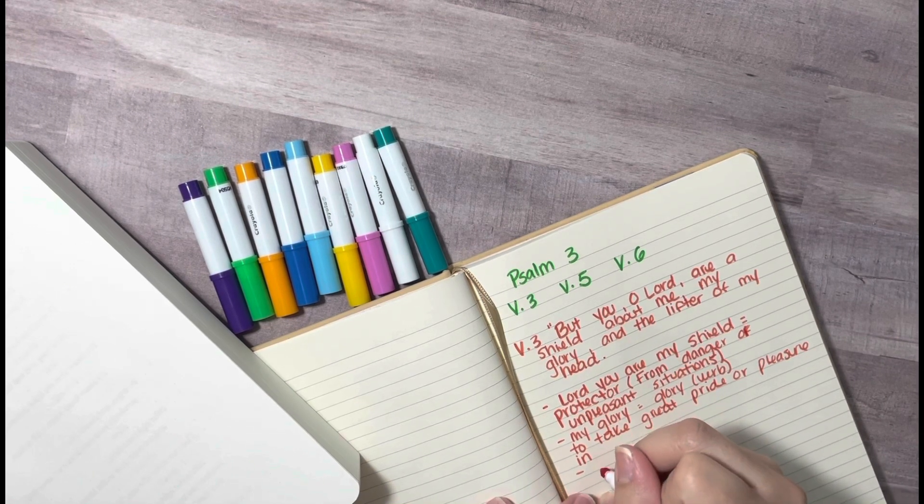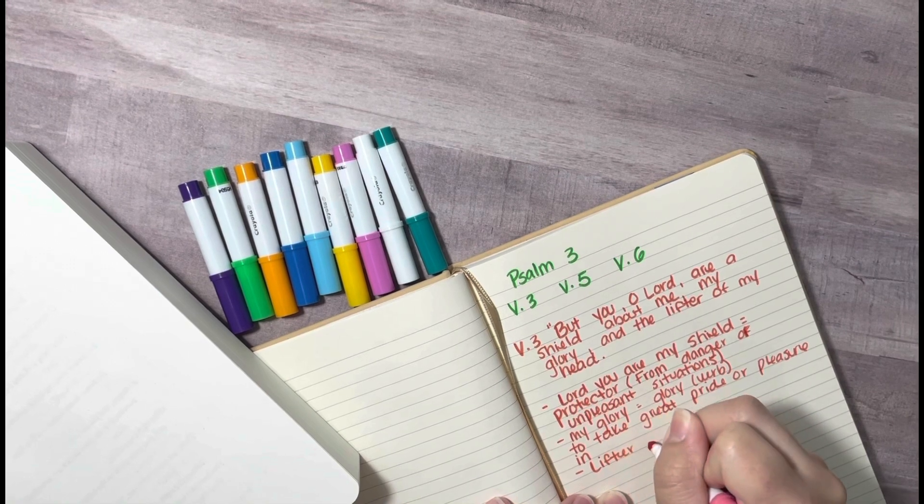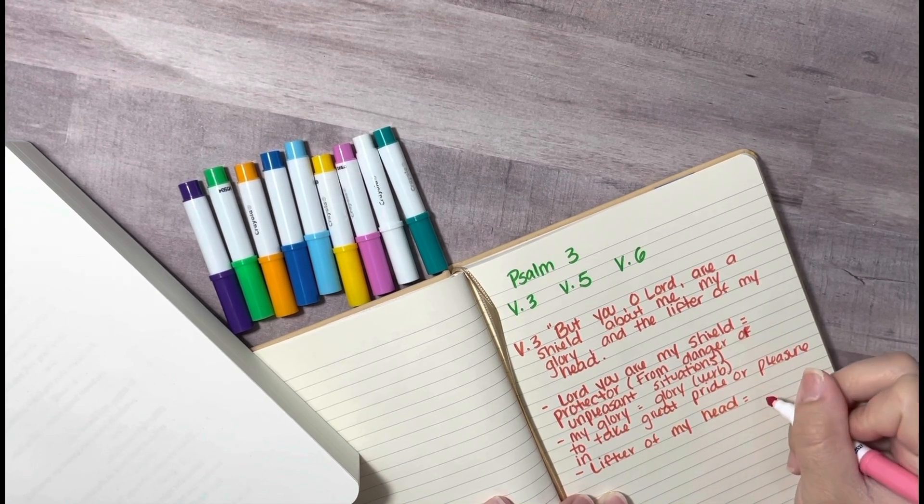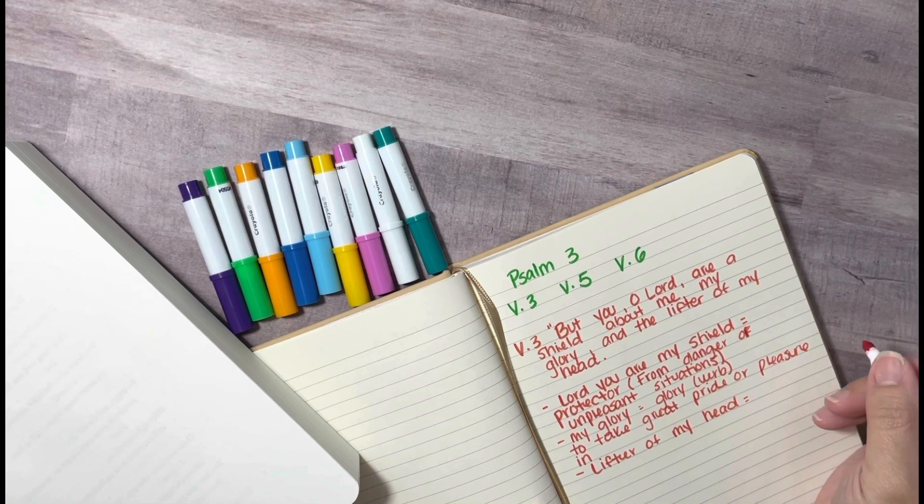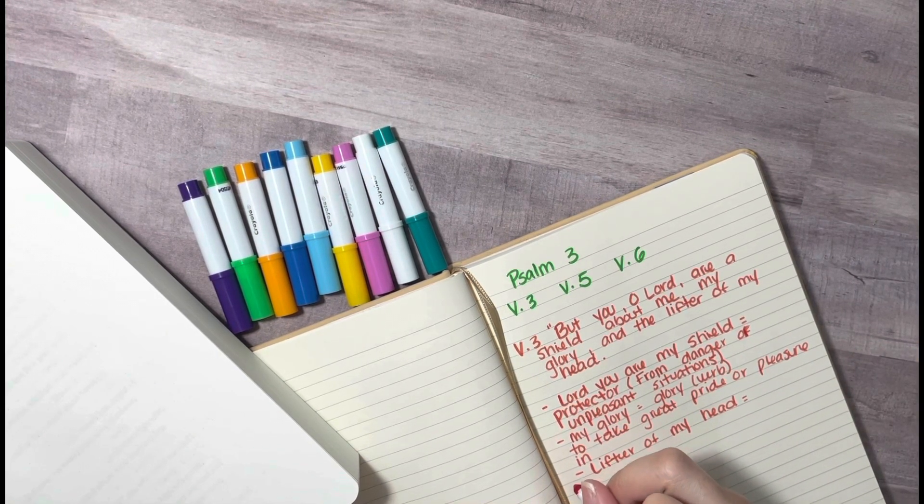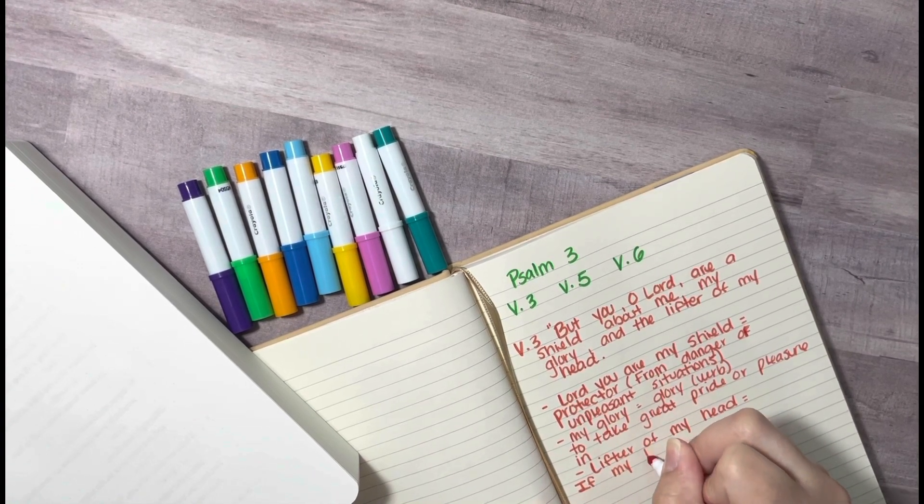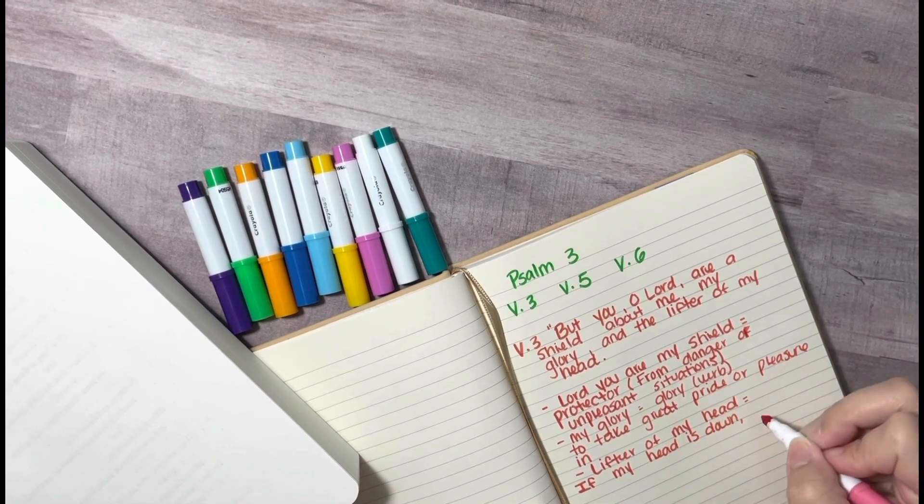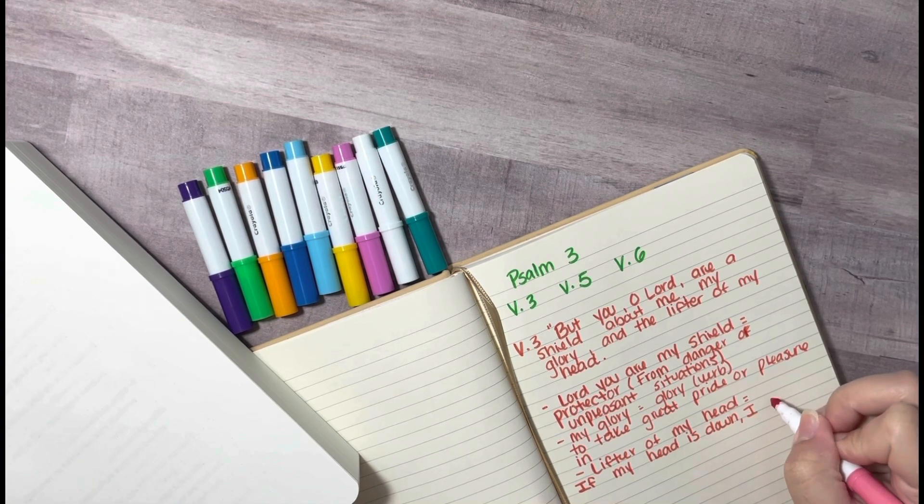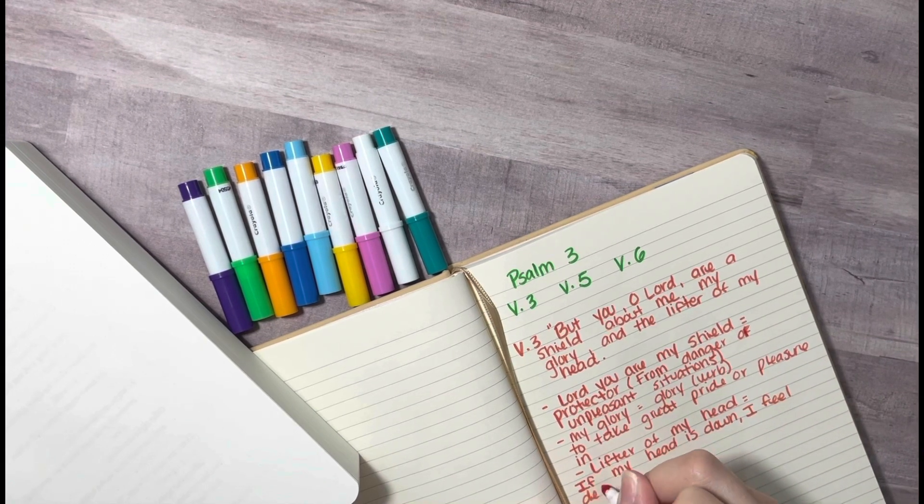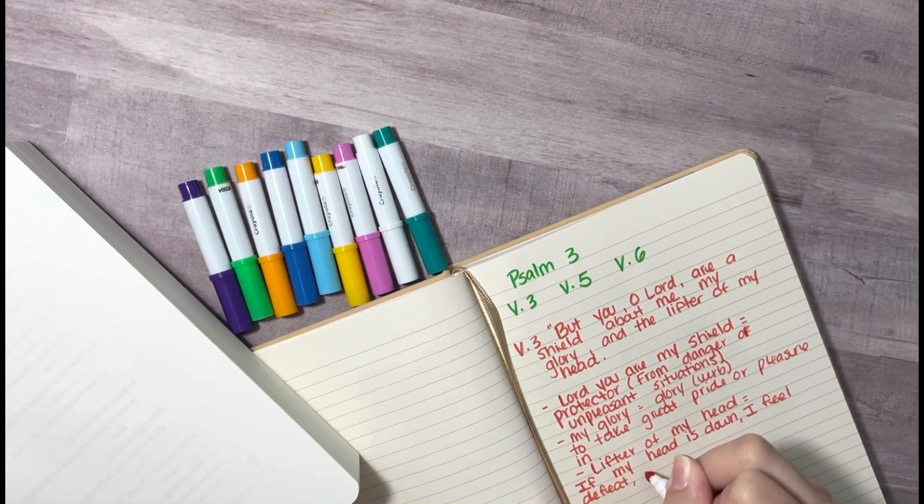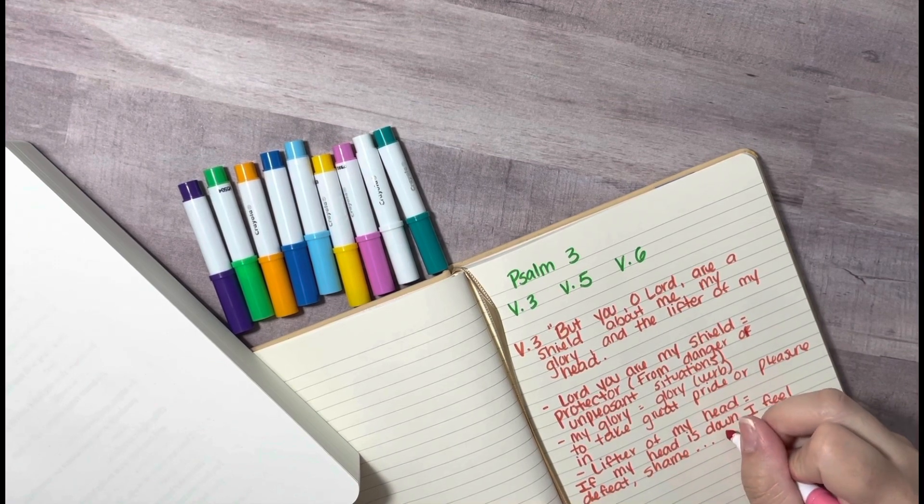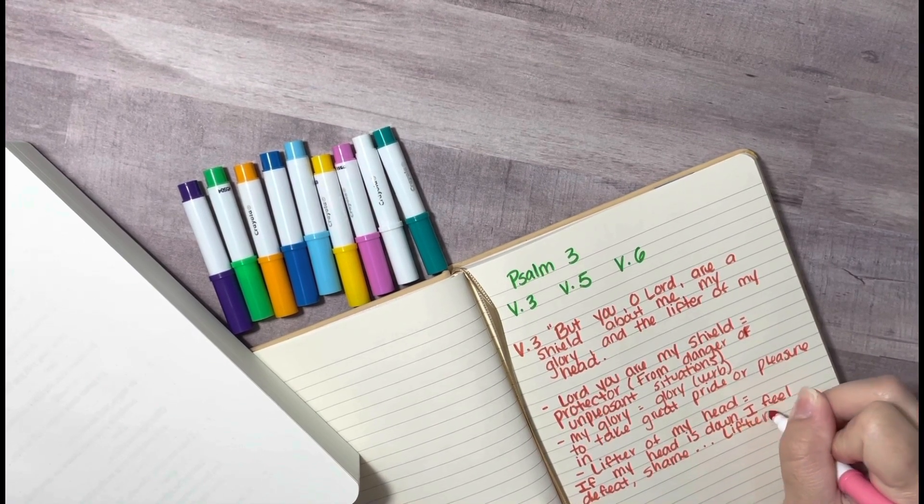Okay, so the last part of this verse is saying, the lifter of my head. So when I think of the opposite of having my head lifted is my head being down. And if my head is down, I could feel defeat, I could feel like I have no strength, I could feel shame. So this part of the verse is saying that the Lord is my shield, my glory, and the lifter of my head. He takes away all of the fear, all of the shame, and he gives me strength. That's what I can really see in this part of the verse.